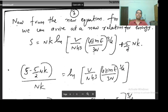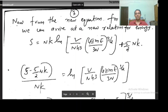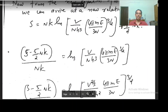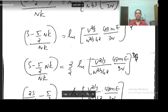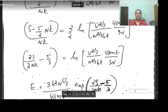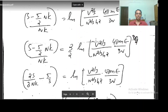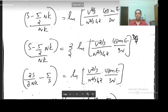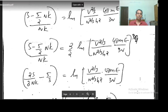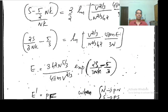From the Sackur-Tetrode equation, taking 5/2 nk here and dividing by nk, I have log of this quantity, and multiplying with 2/3: 2S/(3nk) minus 5/3 equals log of [e^(2n) · (4πme/3n)^(2S)]. So from this I can find energy.